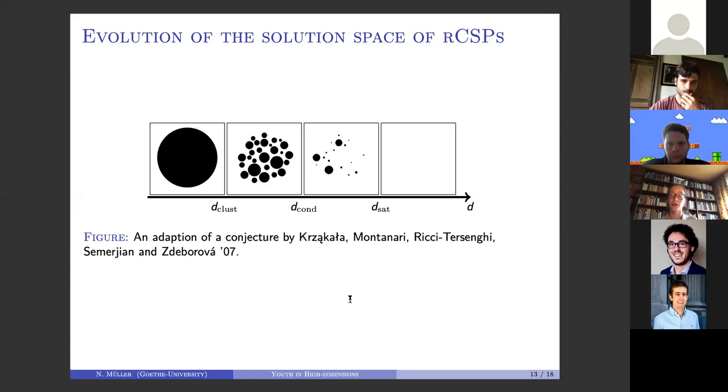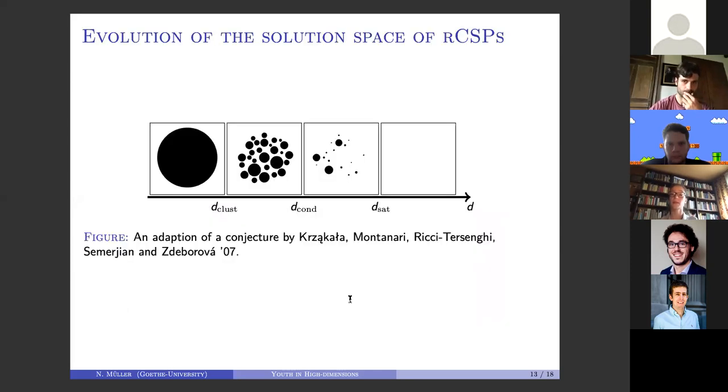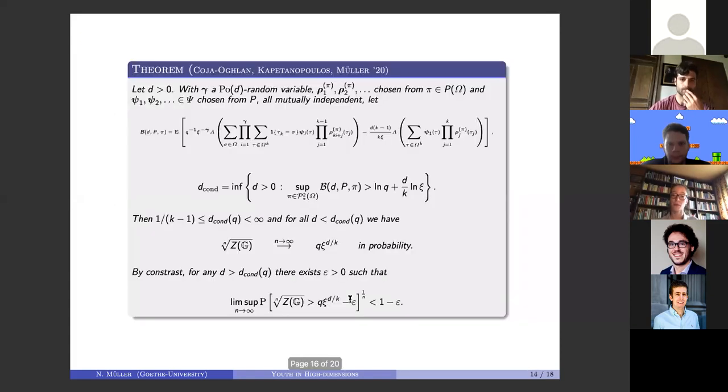But afterwards, there are more clusters, and then after the satisfiability threshold you have no solutions anymore. One result is the identification of this condensation threshold, after which the number of clusters is sub-exponential and the mass of the Boltzmann distribution is carried by sub-exponentially many clusters.